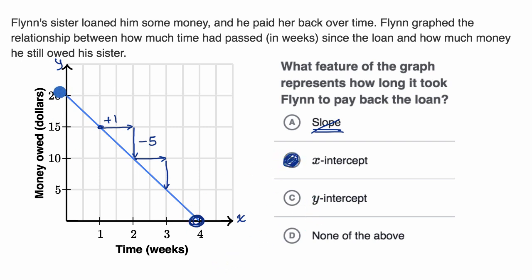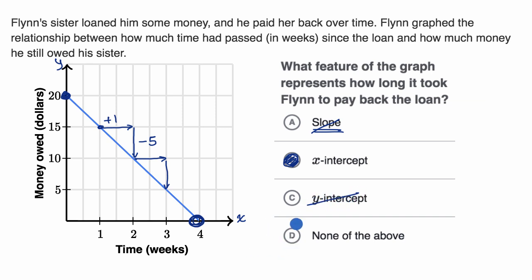Let's review the other ones. The y-intercept is where the graph intersects the y-axis. This tells us what's going on at time t equals zero — when the horizontal variable is equal to zero, we see that Flynn owes $20. So the y-intercept isn't useful for figuring out how long it took to pay back the loan; it's useful for figuring out how much he owed initially. So we'll rule that one out.